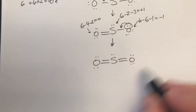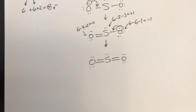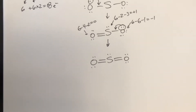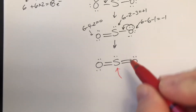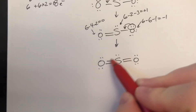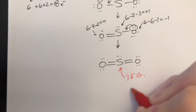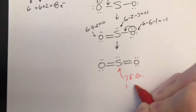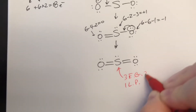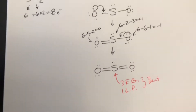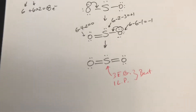Everything's zero here. In terms of geometry, this molecule has three groups, one of which is a lone pair, so we get the exact same geometry as the last one — bent. Not surprising, they're similar molecules.